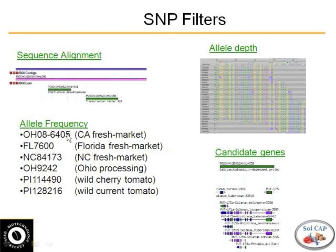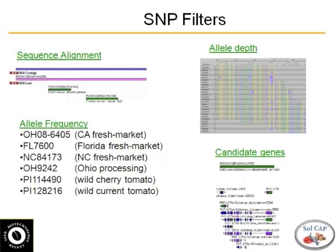Then we looked at the allele frequency between the different genotypes that we sequenced. You could have SNPs specific to fresh market types, SNPs specific to processing types. Did we see it 3 and 3, or 1 and 5? If we saw 3 A's and 3 G's, we're more confident that SNP will be useful in our germplasm than if we only saw it once out of all genotypes sequenced. So we classified SNPs based on their allele frequency across the genotypes.